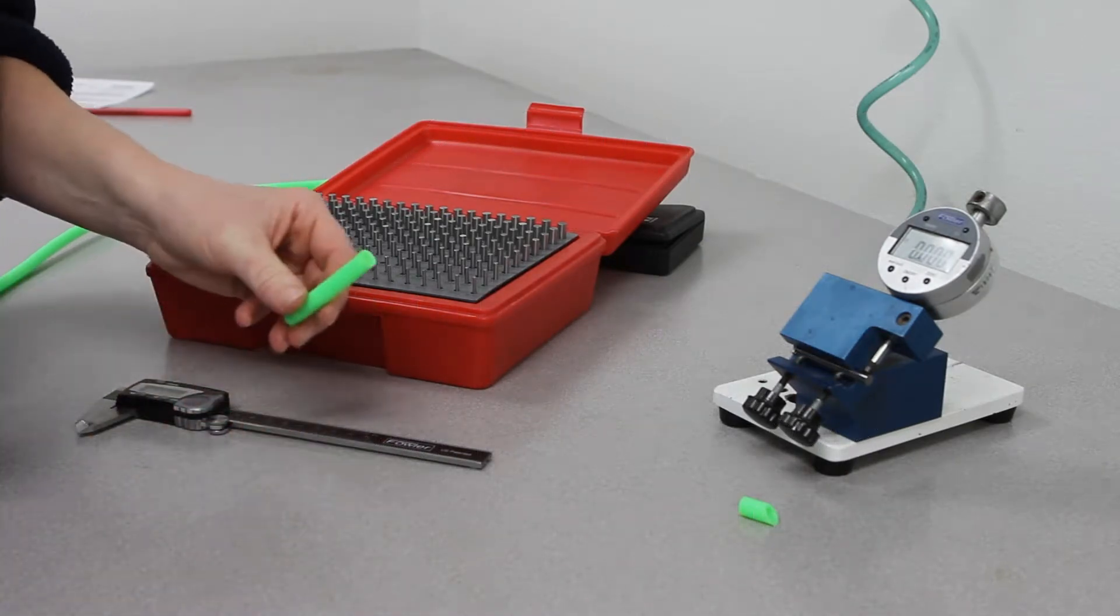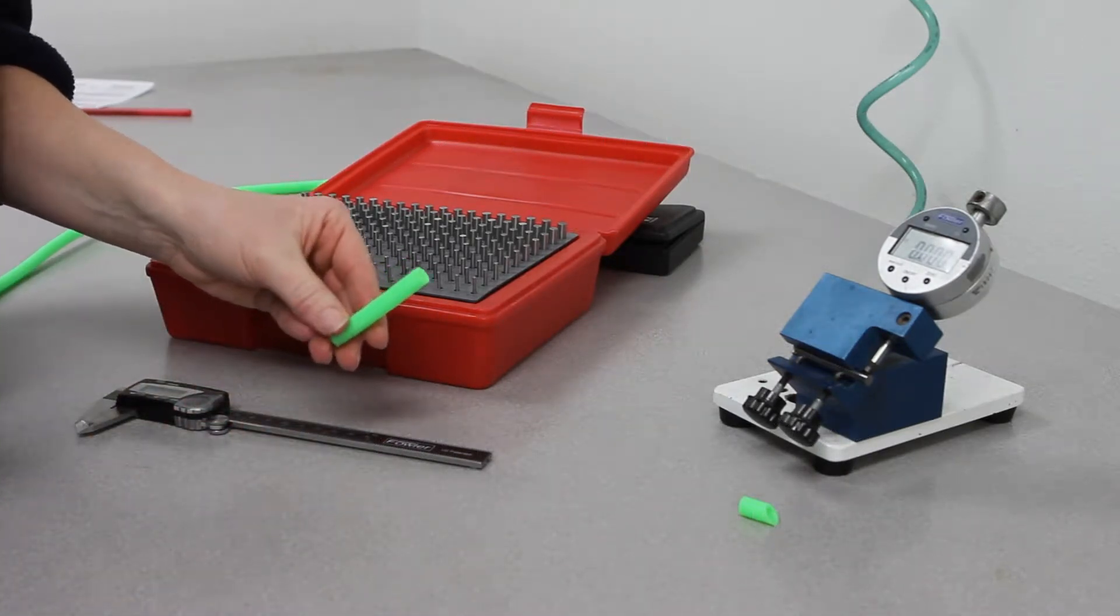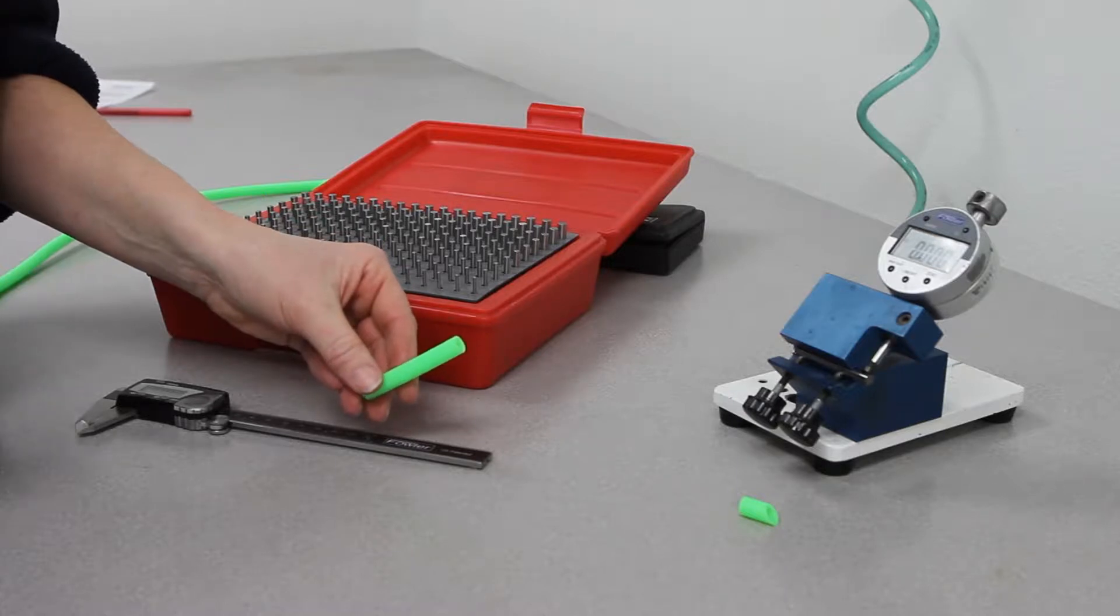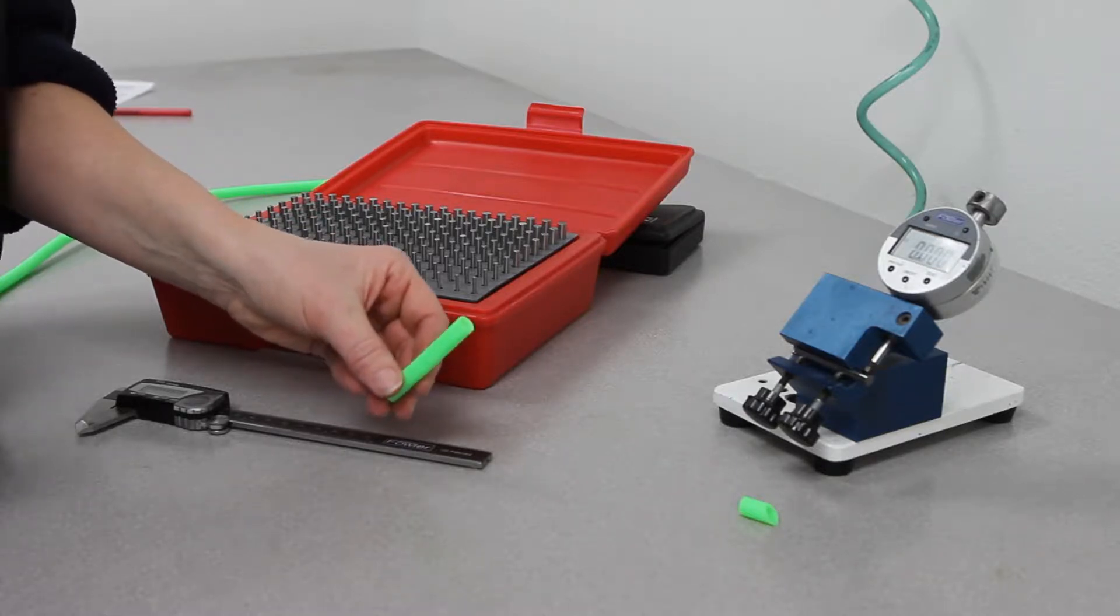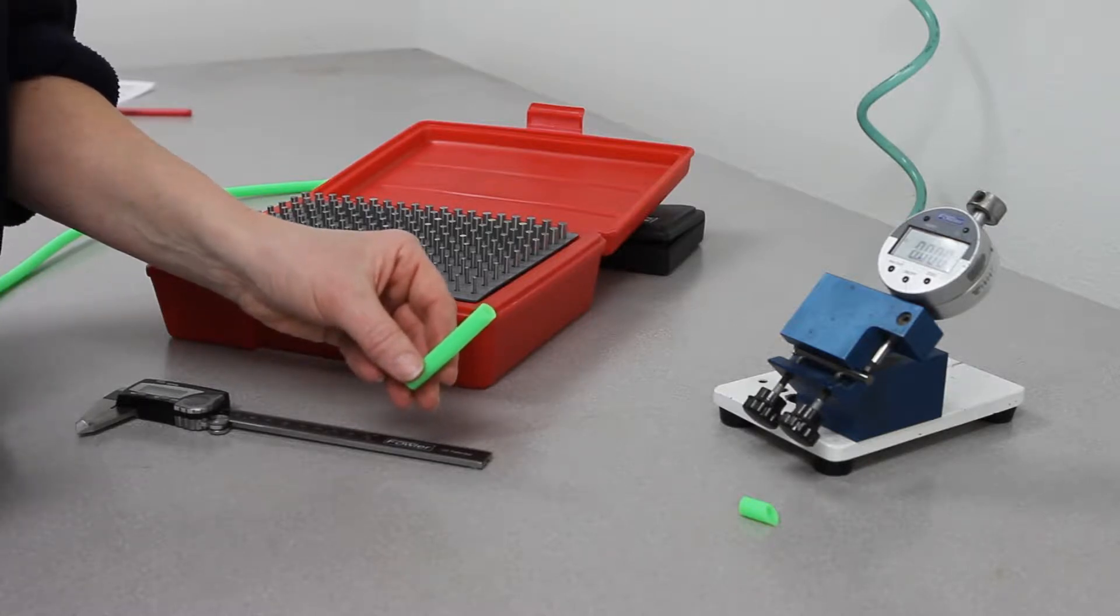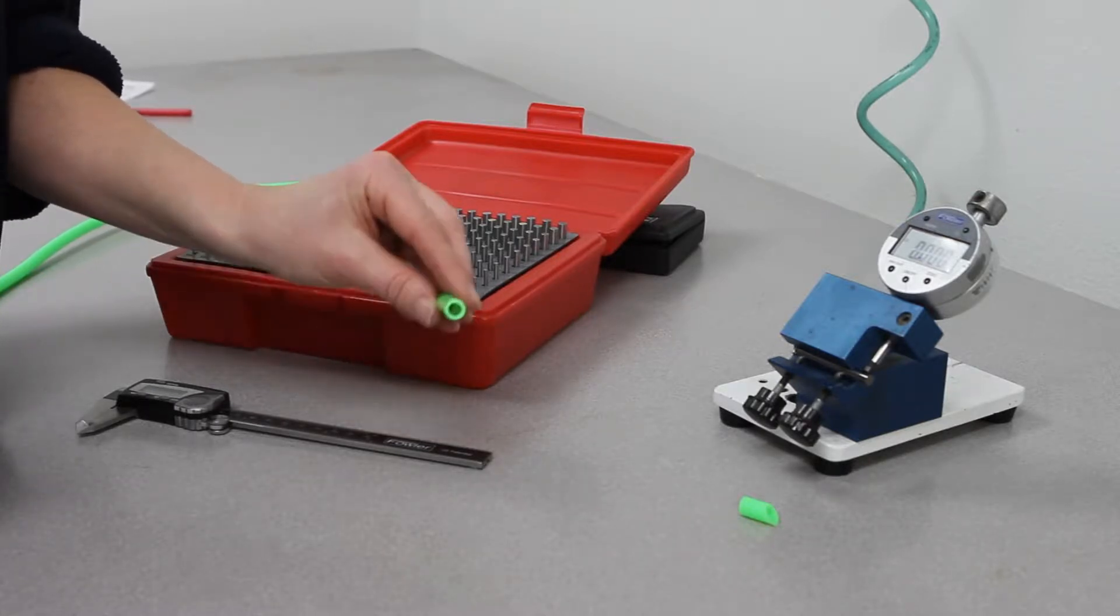Today we'll be measuring part number 1A-152-46. Our measurements is 3 eighths by quarter inch. We measure three parts of this tubing: we measure the OD, the ID, and the wall.